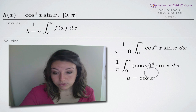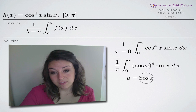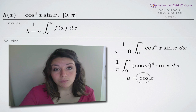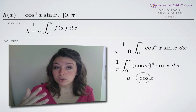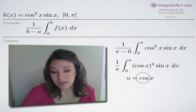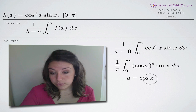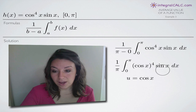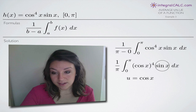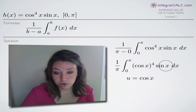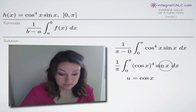We're going to set u equal to cos of x. The reason we pick cos of x instead of sin of x is because when we're doing u-substitution, we find u and then take the derivative du, and the derivative of cos of x is negative sin of x, which might allow us to cancel out the sin of x in the integrand. That's why I picked cos of x to be u.